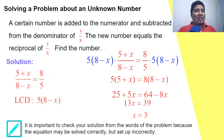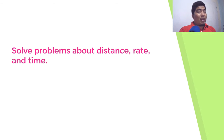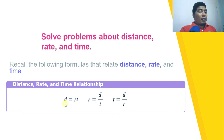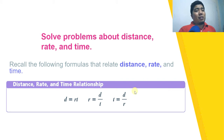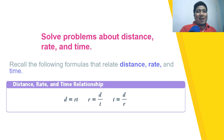Now let us go to the second example. We will solve problems about distance, rate, and time. Distance equals rate times time. To solve for rate, divide distance by time; to get time, divide distance by rate. Distance refers to lengths like kilometers or miles; rate is like kilometers per hour; and time can be hours, minutes, or seconds.